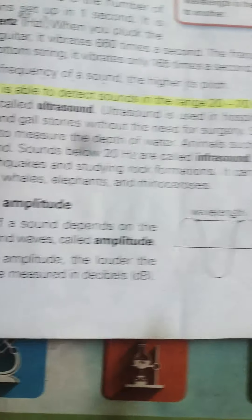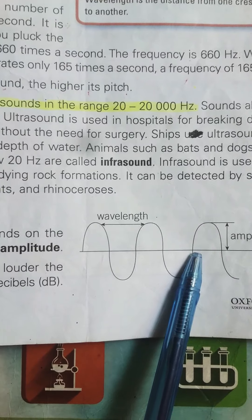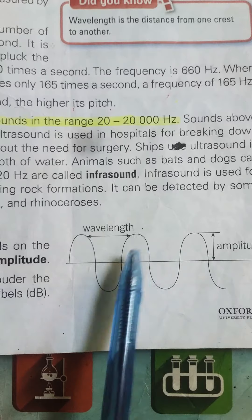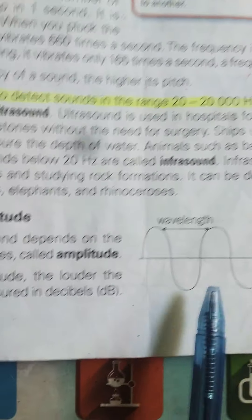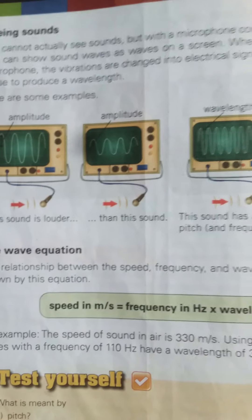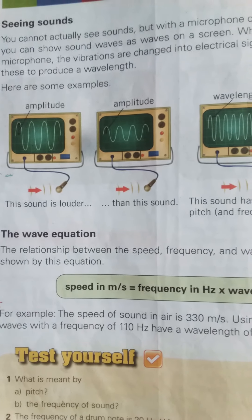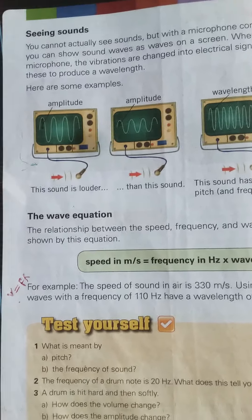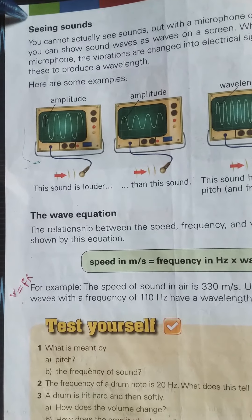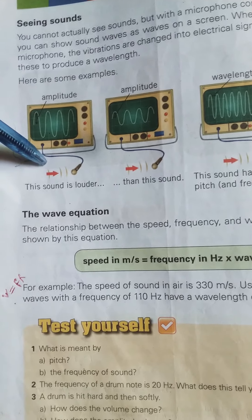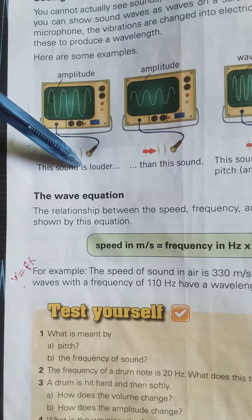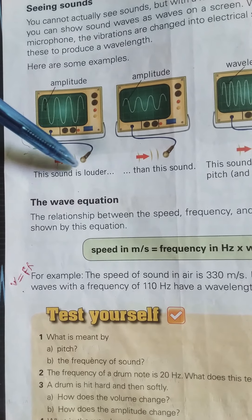So, amplitude is the distance between the crest and the middle line. The higher the amplitude, the louder the sound, and that is measured in decibels. Now, it is not possible to see sound directly, but we can see it using an instrument called the oscilloscope.